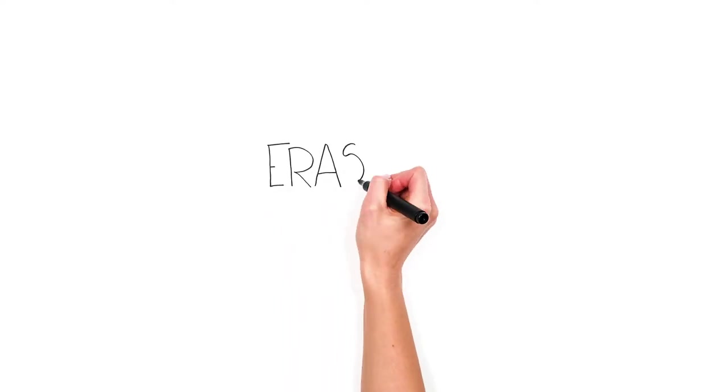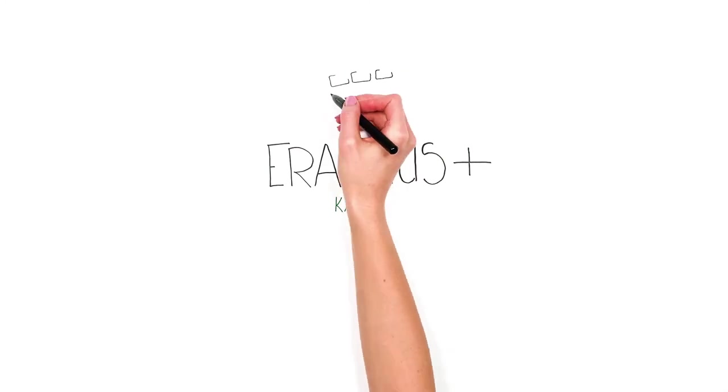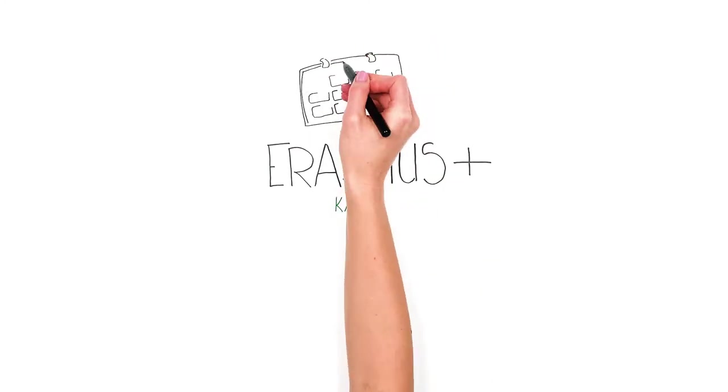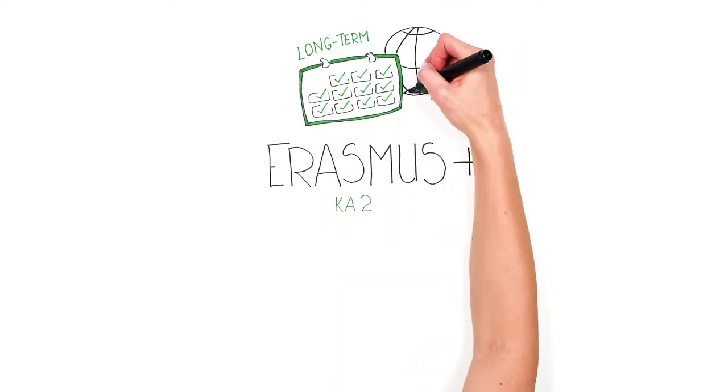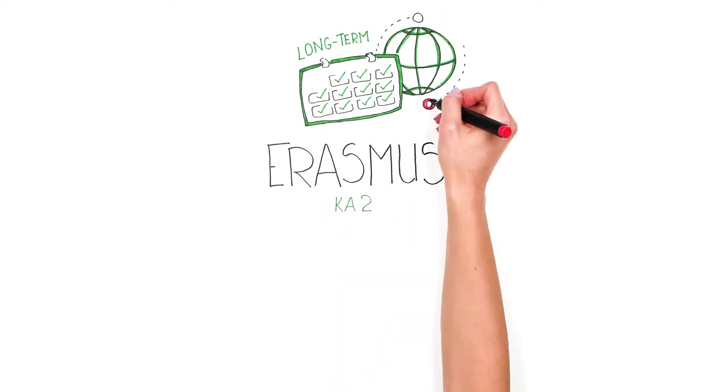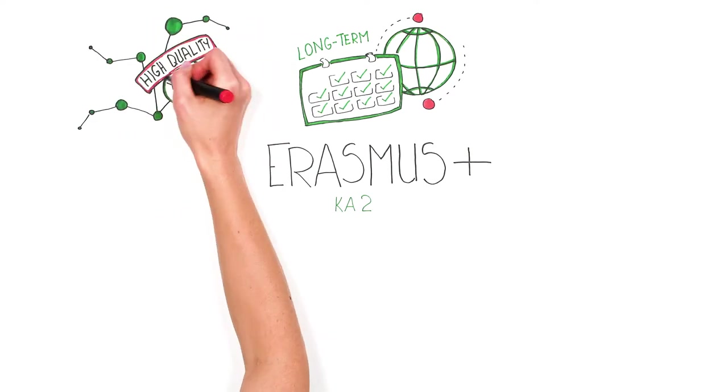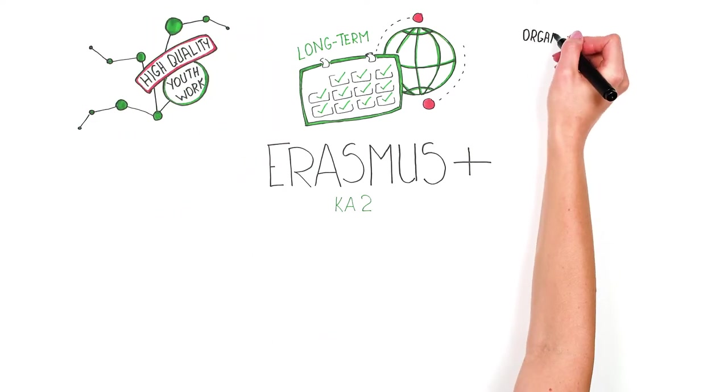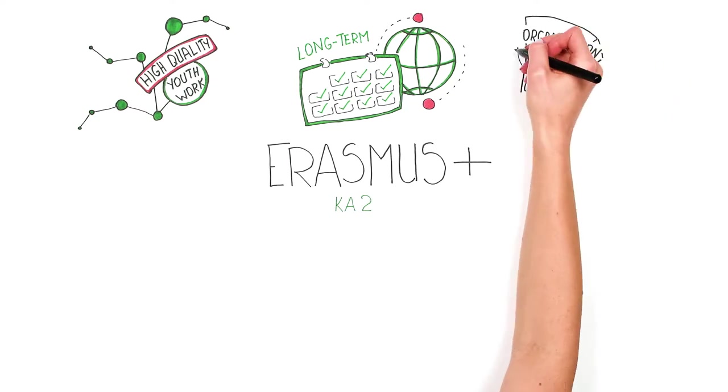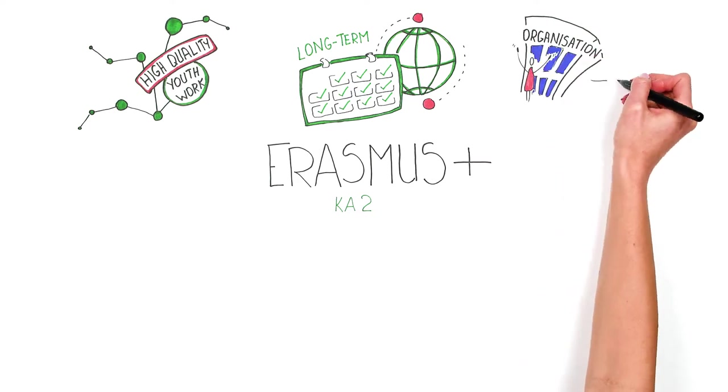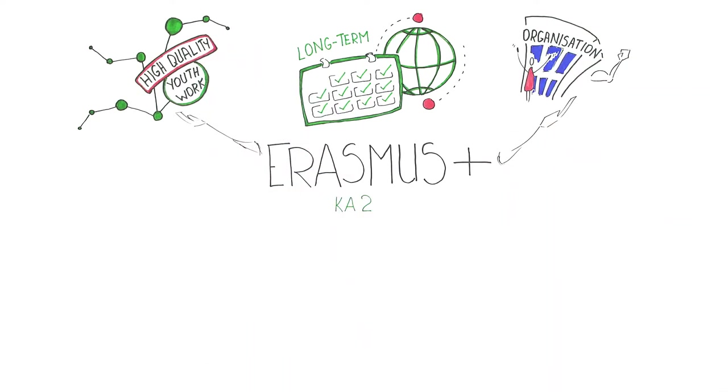Key Action 2 of the European Education Programme Erasmus Plus Youth in Action supports long-term transnational cooperation projects such as strategic partnerships, capacity building projects, and transnational youth initiatives. These projects aim to support the quality development of youth work, strengthen professional capacity development of organizations and their youth workers, and in case of transnational youth initiatives, foster the social commitment and entrepreneurial spirit of young people.